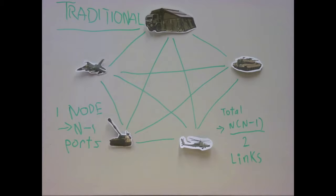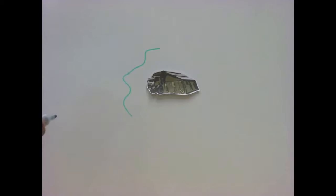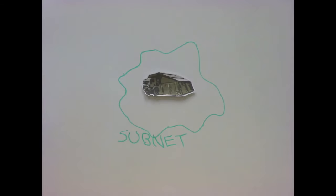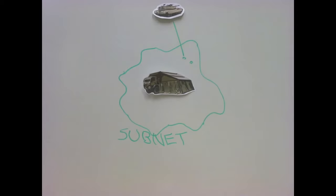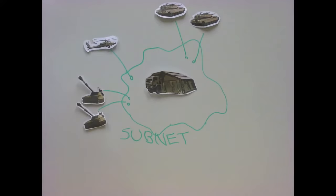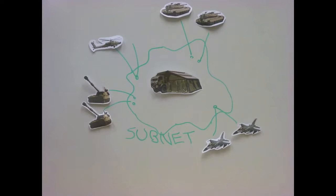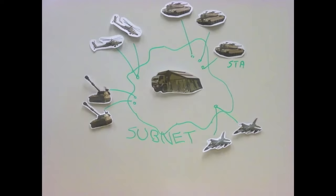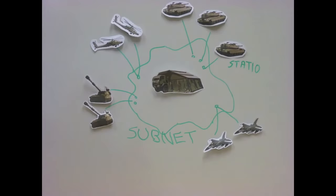The cost of providing links between any pair of stations grows at n-squared and thus makes such a system impractical for a large value of n. As such, the SAF employs the concept of a subnet to minimize the number of ports and links required. The subnet consists of an interconnected number of intermediate message processors, IMPs, which can be found in the battle management system. These IMPs have the capability of attaching to more than one station and routing data through the subnet.